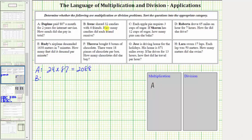For B, Irene shared 32 candies with four friends. How many candies did each friend receive? So she has a total of 32 candies. She's going to break them into four equally sized groups for her four friends. And therefore, to determine how many candies each friend receives, we perform division.